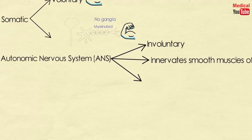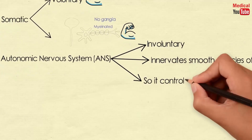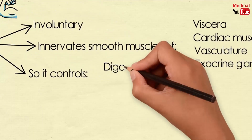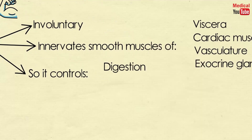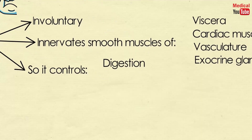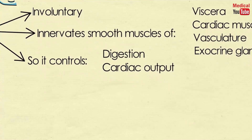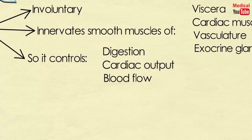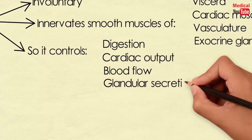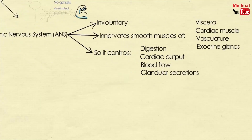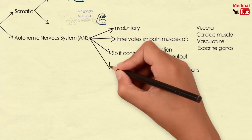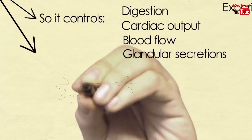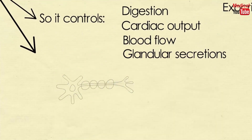The ANS controls digestion, cardiac output, blood flow, and glandular secretions. Anatomically it is interrupted by ganglia, and the post-ganglionic fibers are usually not myelinated.